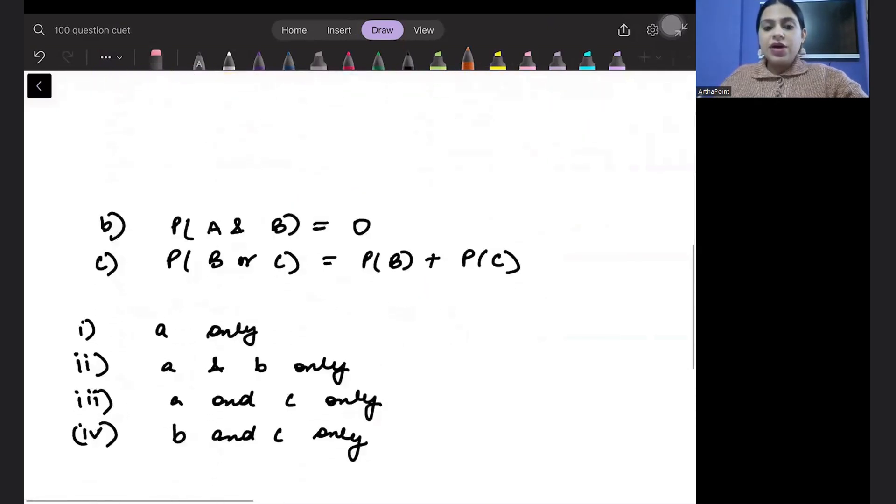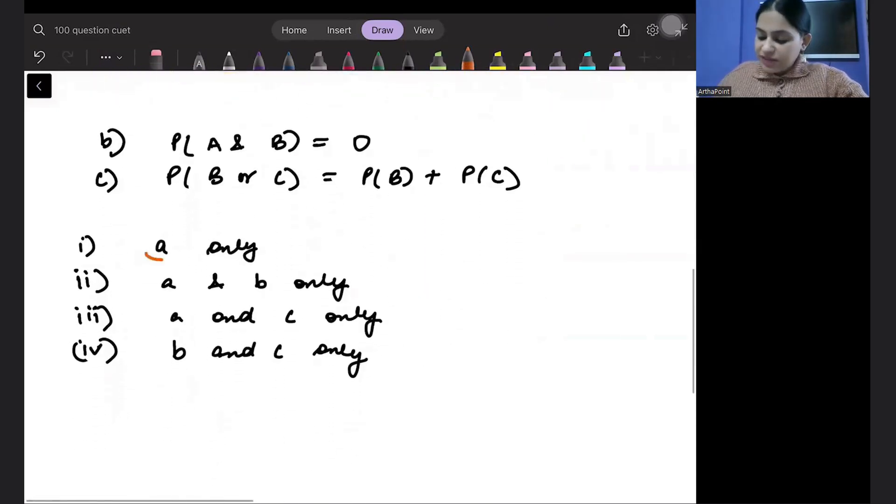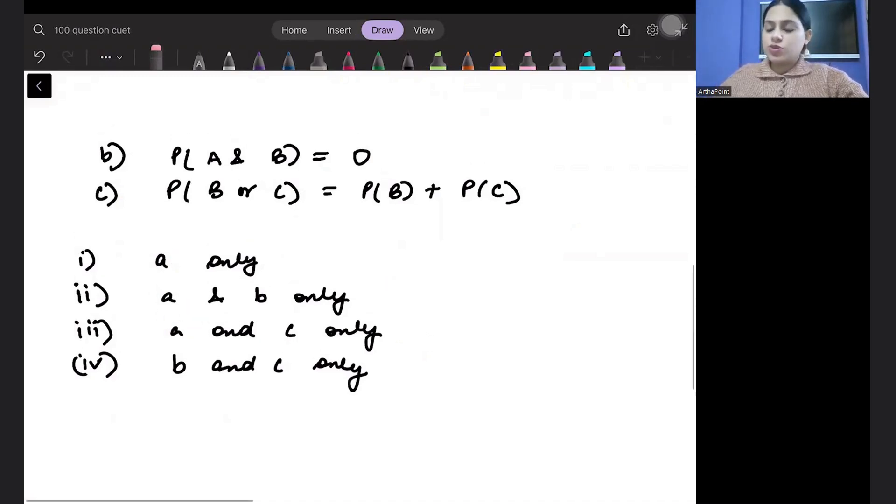Now if I look at the options, wherever I see A, I can simply eliminate those options because A itself is false. So I will be left with D. But let me just do it with another method also. Let me take a look at other options.